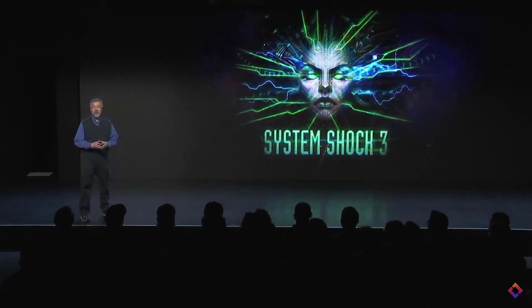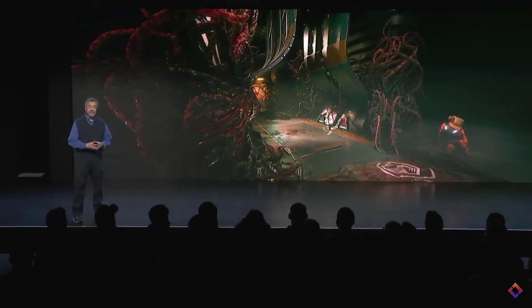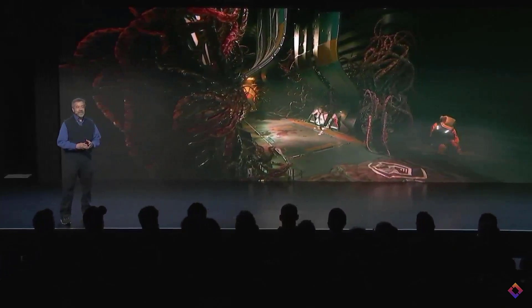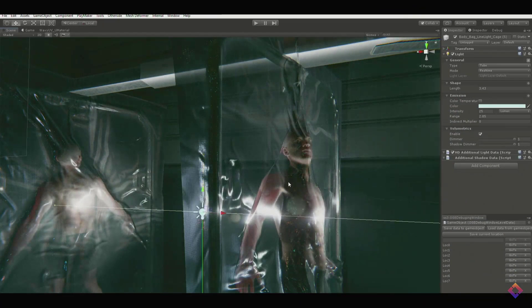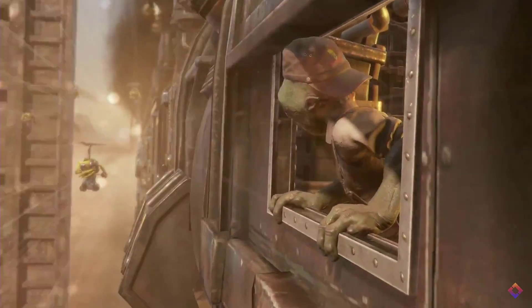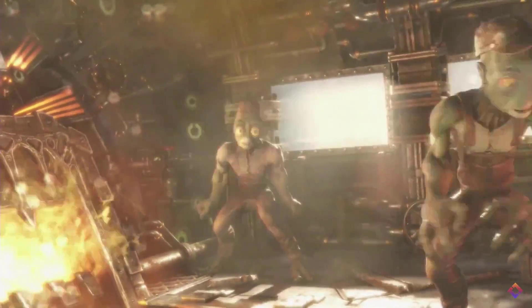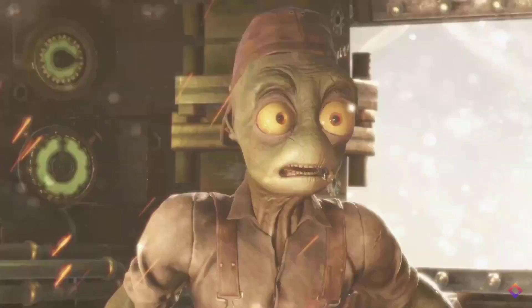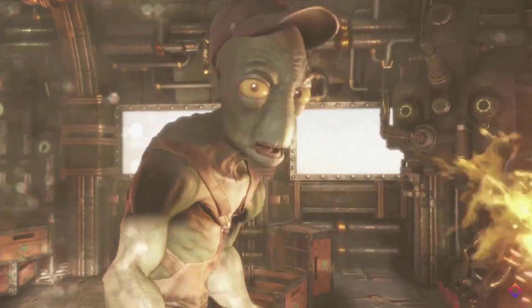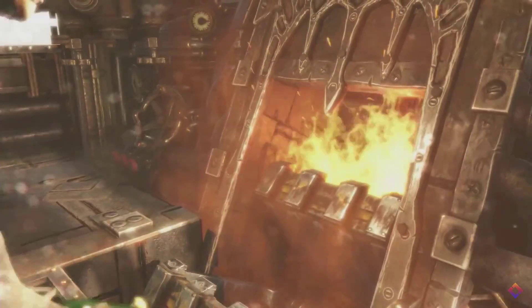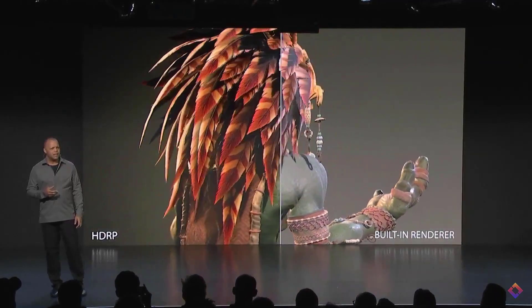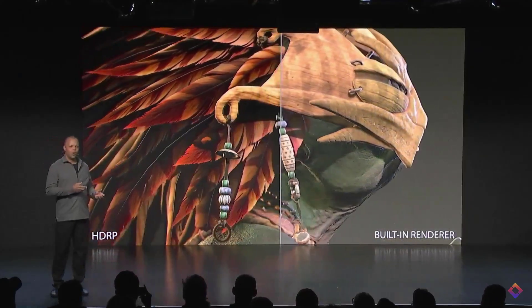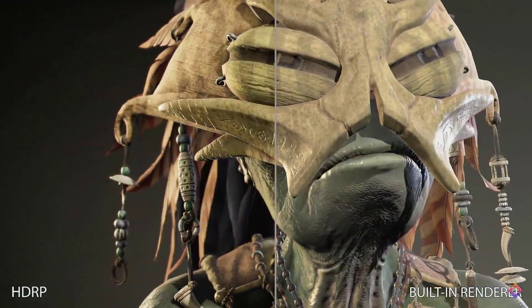Warren Spector came on stage to announce that System Shock 3 is being developed using Unity with the HDRP pipeline. They did a demonstration of how HDRP was utilized, and it impressed me. Next up, Oddworld: Soulstorm was also demonstrated — it looks pretty good. The chat group was very much there for Oddworld — it was by far what people wanted to see, and they were very happy. They also showed a side-by-side comparison of the standard renderer versus HDRP and what they got out of it.